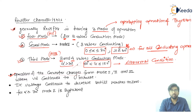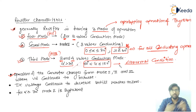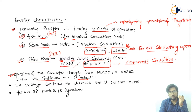The converter transitions from mode 1 to mode 2 and then to mode 3. First there is mode 1 with two and three valves conducting, then mode 2 with exactly three valves conducting, then mode 3 with three and four valves conducting. This transition depends on Vd: as Vd continues to increase, the converter operation changes from mode 1 to mode 2 to mode 3.